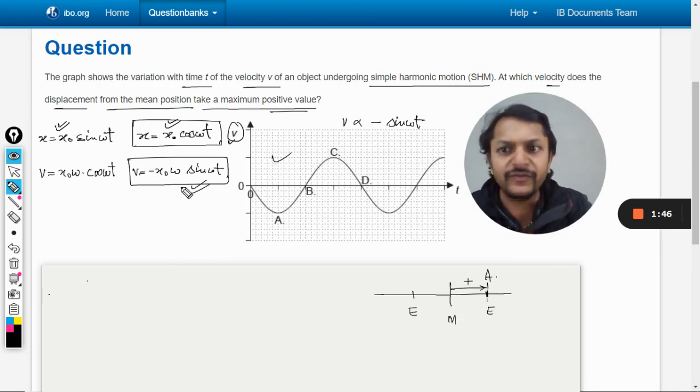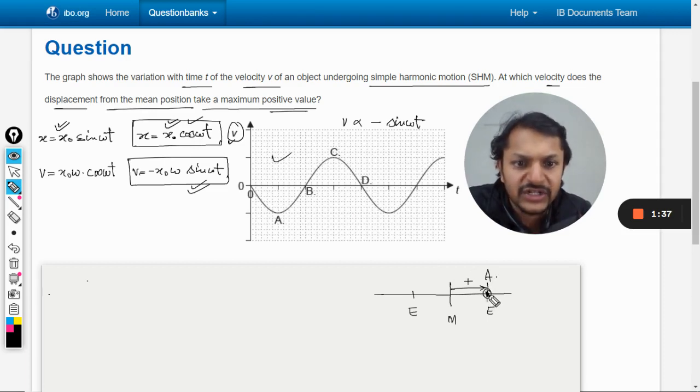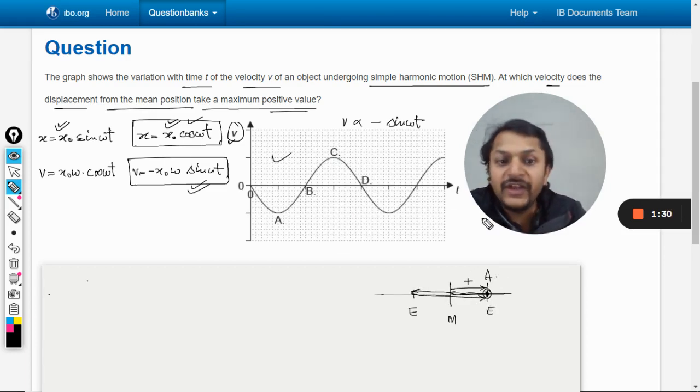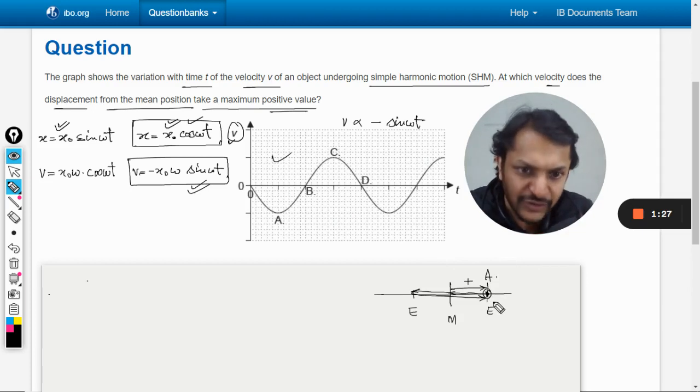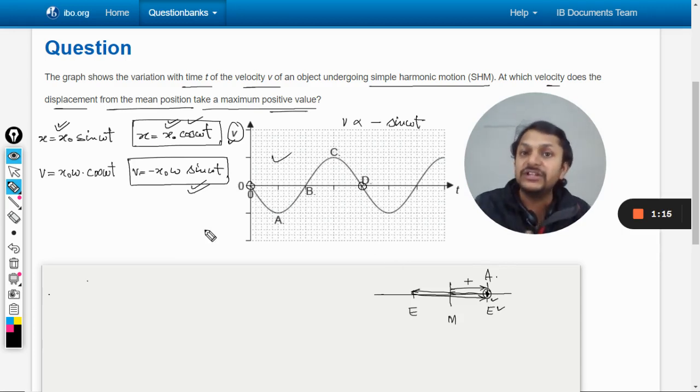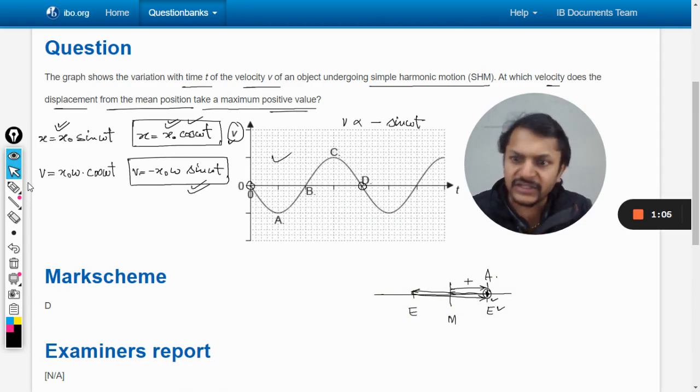From this graph it is evident that the velocity expression must be the negative sine function. So if this is the velocity, they are using cos as the displacement function. This means the body started at extreme position, went through the mean position to the other extreme and came back. We want maximum displacement on the positive side, at the right hand extreme position. This occurs when time started at t = 0 or when oscillation ended at point D. We don't have zero in the options, so our answer is D. The mark scheme confirms the answer is D.